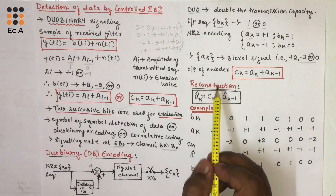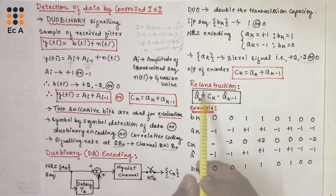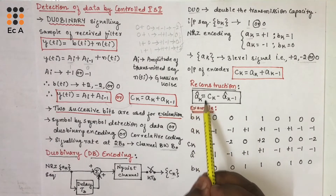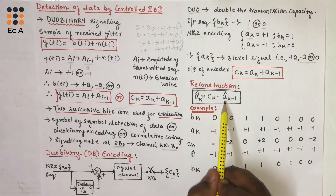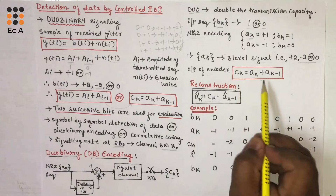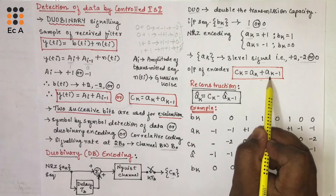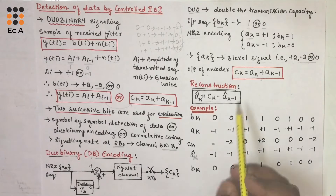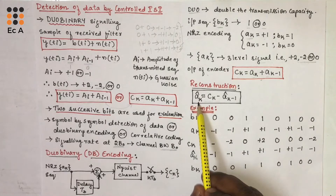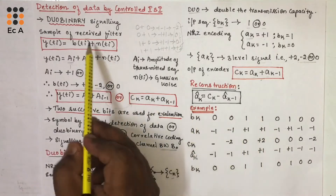The output of the encoder can be expressed as CK = AK + AK-1. To reconstruct the transmitted signal, let AK_cap be the estimation of AK. Then AK_cap = CK - AK-1_cap. This equation shows that if CK is received with some error, then AK_cap will have the error, and this error will propagate at the output sequence. This is one of the drawbacks of Duobinary signaling.